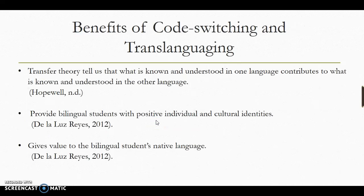Code-switching and translanguaging also exclude monolingual speakers. On the other hand, the benefits include the transfer theory, which tells us that what is known and understood in one language contributes to what is known and understood in the other. Code-switching and translanguaging also provide bilingual students with positive individual and cultural identities.